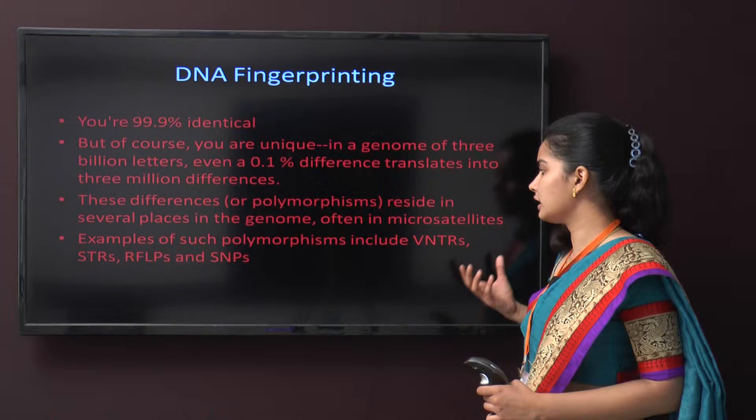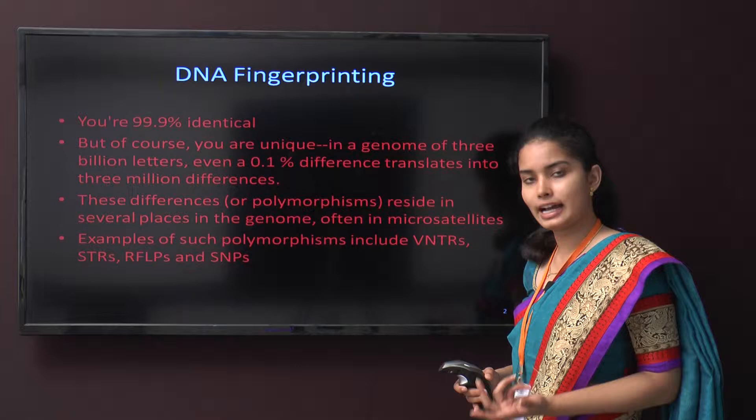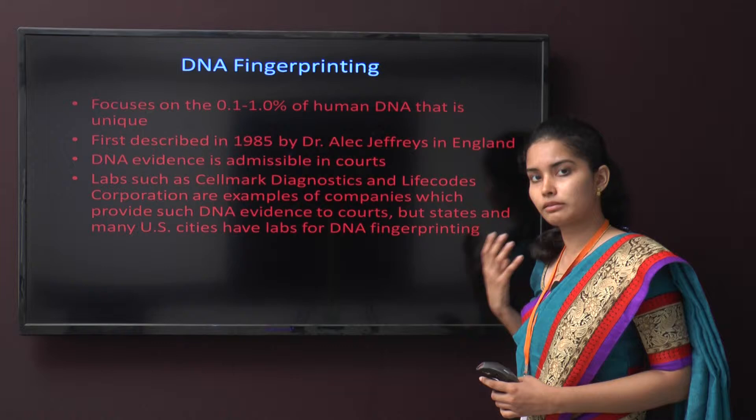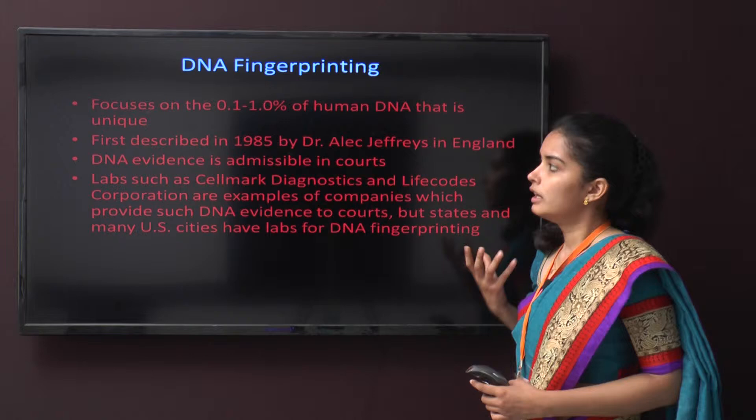Examples of such polymorphisms include VNTRs, STRs, RFLPs, and SNPs. DNA fingerprinting focuses on the 0.1 to 1% difference that describes the unique person. It was first described in 1985 by Dr. Alec Jeffreys in England.